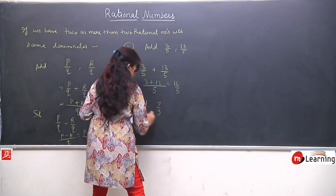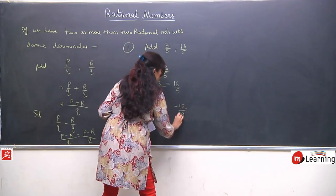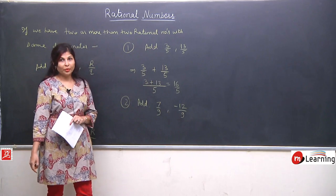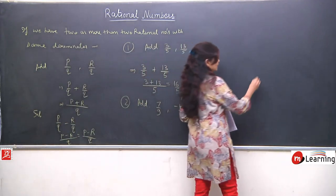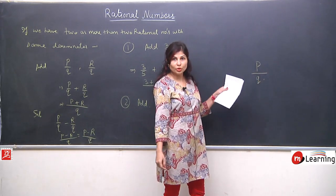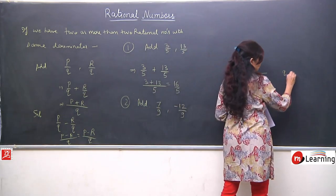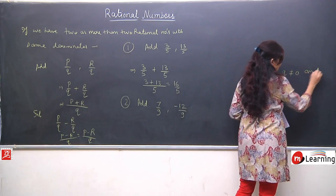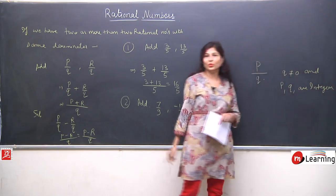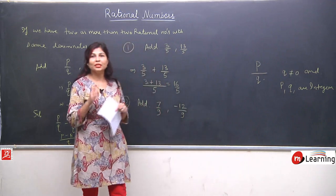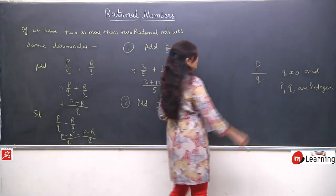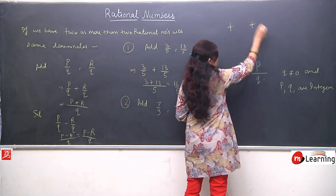Now I am taking another example of addition: add 7 by 9 and minus 12 by 9. That was quite simple because both were positive rational numbers. But now we need to remember the definition of rational numbers — they are in the form P upon Q where Q is not equal to zero, and importantly P and Q are integers. So we may also get negative numbers. Before solving this, let me do a small recap of integer rules.